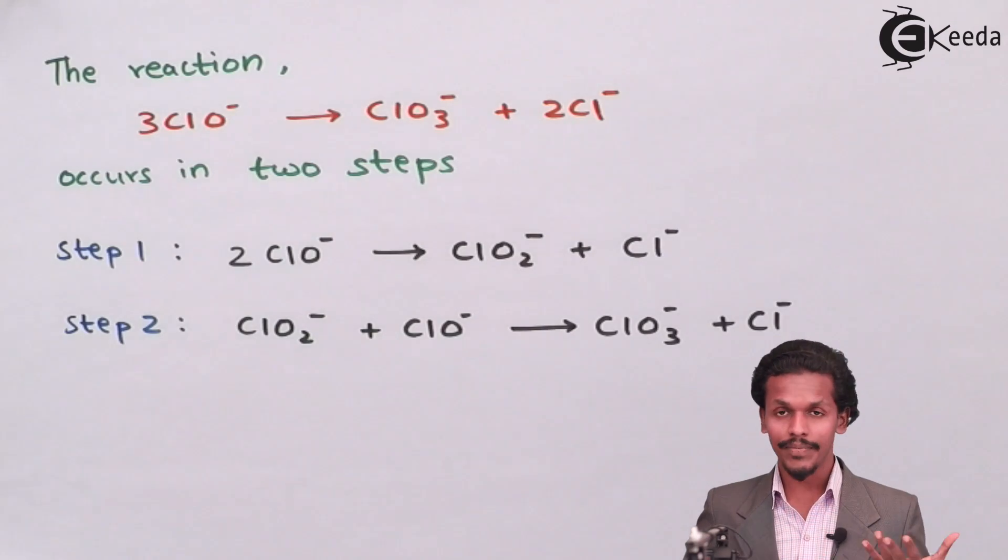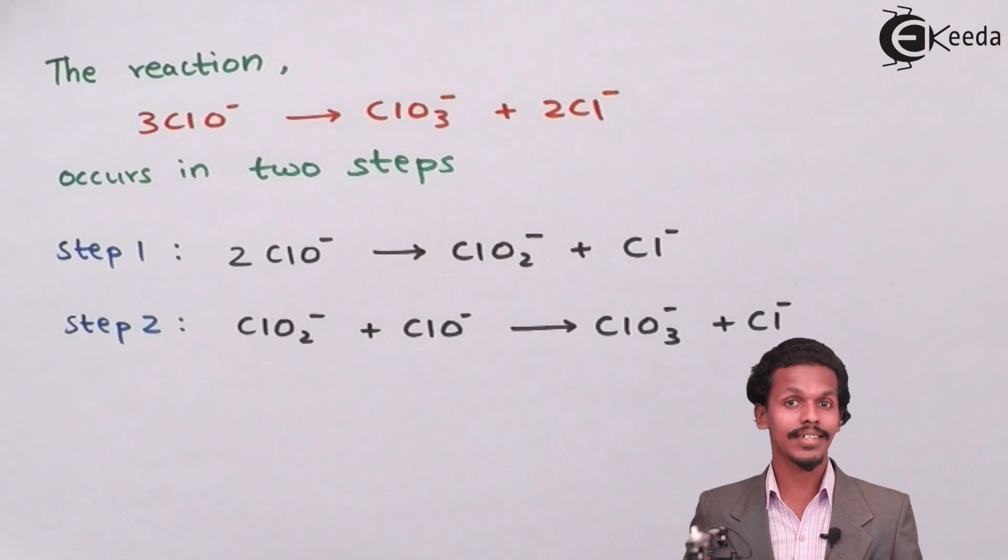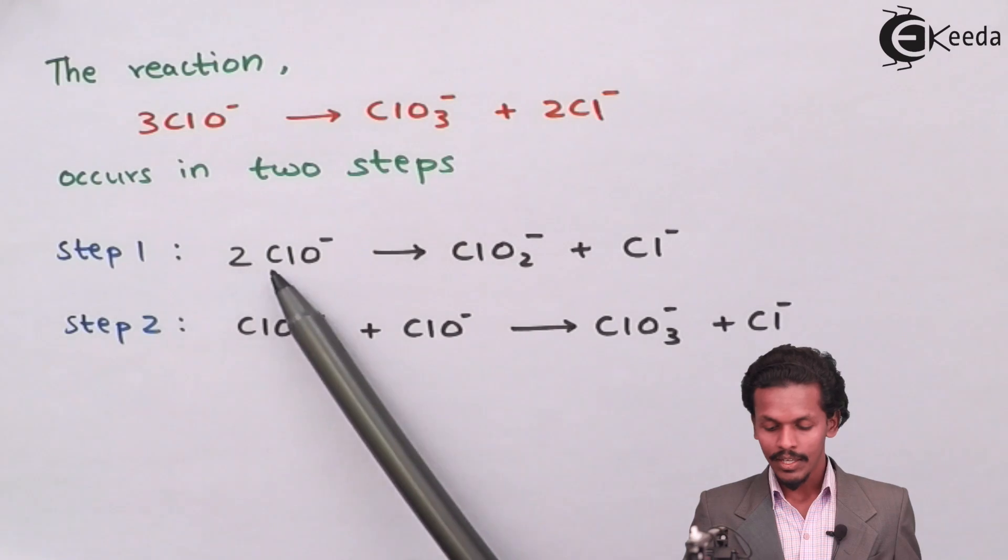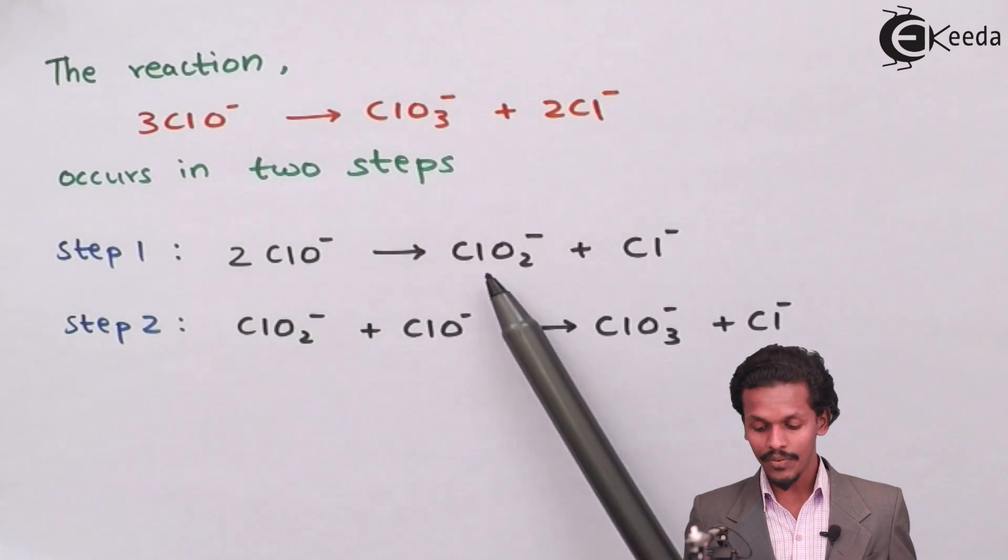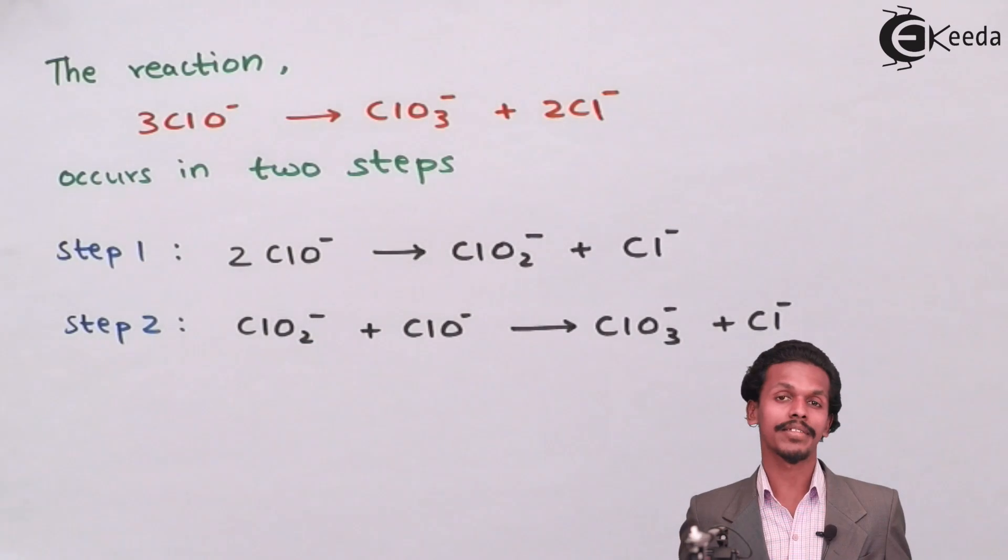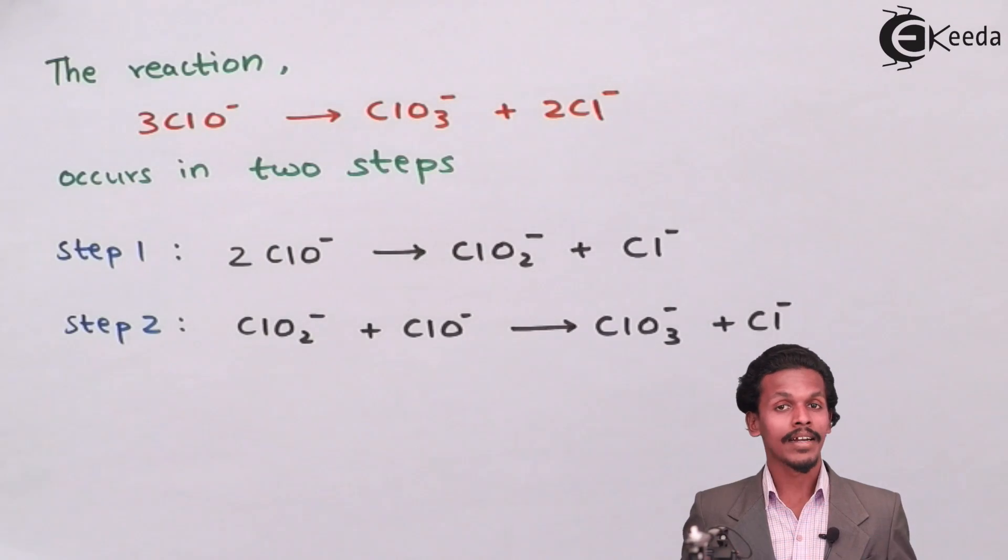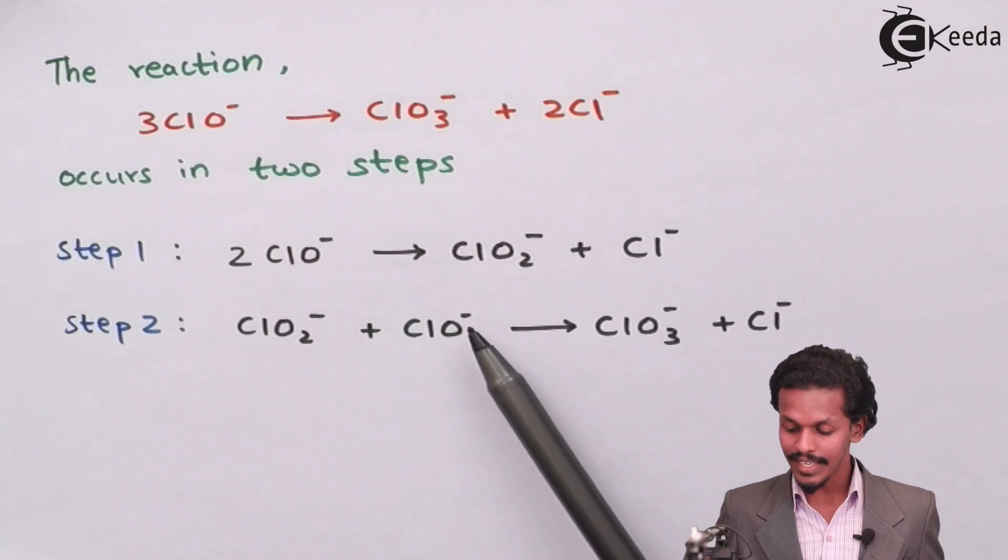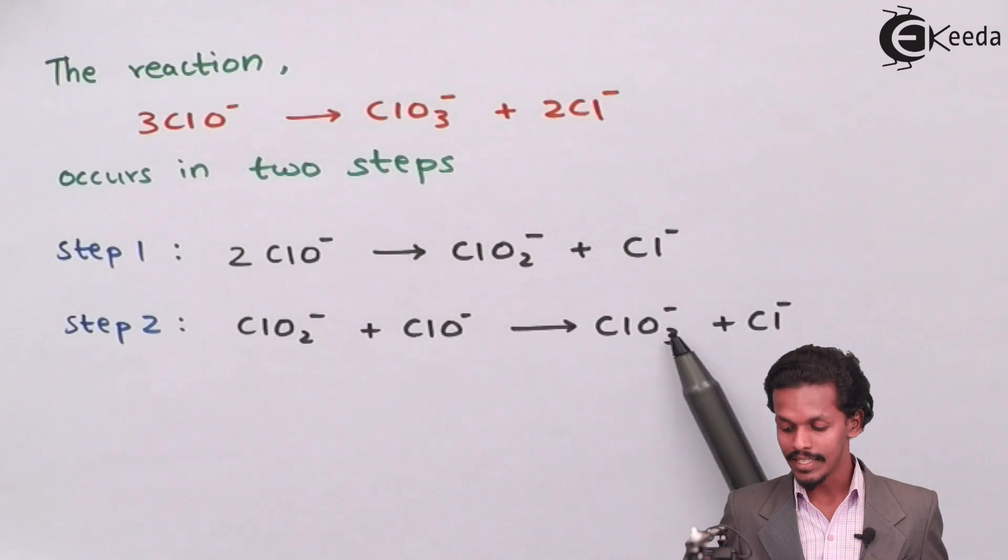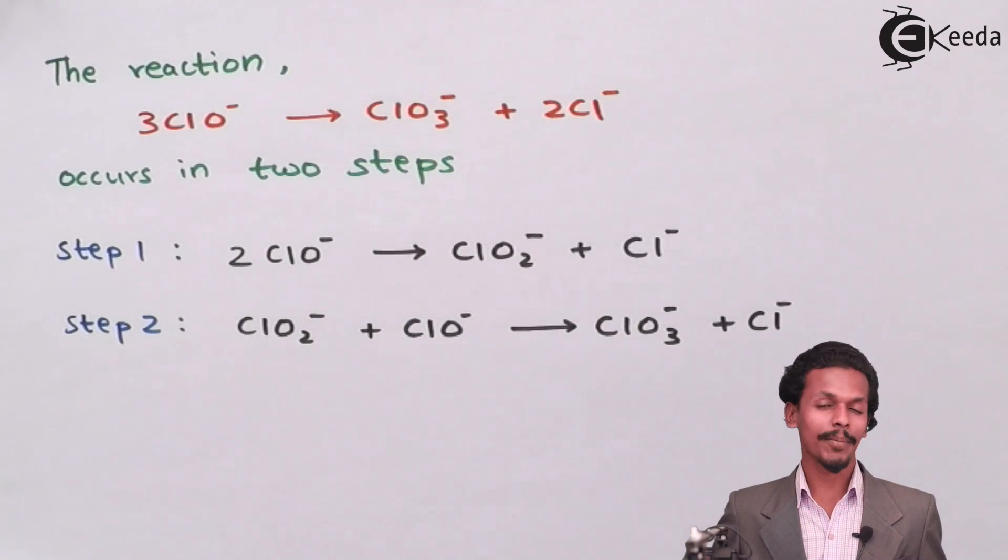After dividing this reaction we get elementary reactions like Step 1: 2ClO- will give you ClO2- plus Cl-, and Step 2: ClO2- plus ClO- will give ClO3- plus Cl-.